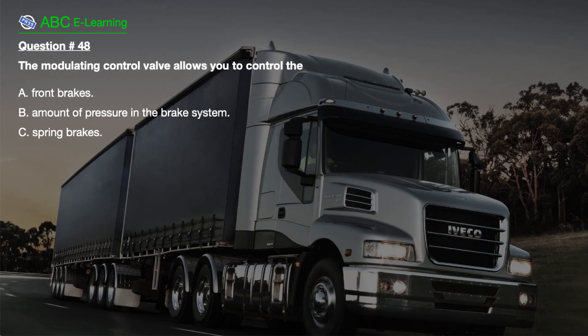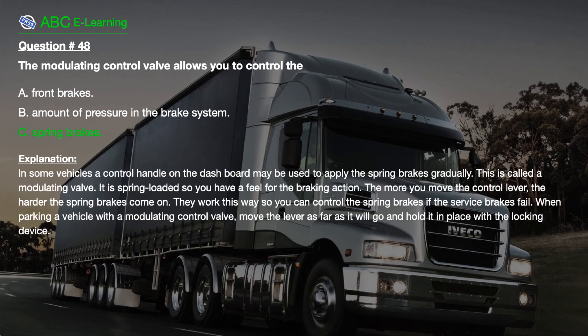Question number 48. The modulating control valve allows you to control the: A. Front brakes. B. Amount of pressure in the brake system. C. Spring brakes. The correct answer is C. Spring brakes. Explanation: In some vehicles, the control handle on the dashboard may be used to apply the spring brakes gradually — this is called a modulating valve. It is spring loaded so you have a feel for the braking action. The more you move the control lever, the harder the spring brakes come on. They work this way so you can control the spring brakes if the service brakes fail.